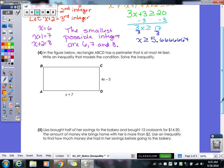So in the figure below, we have rectangle ABCD has a perimeter that is at most 44 feet. Write an inequality that models the condition and then solve the inequality. So perimeter means we do what with our sides? Add them all together. But keep in mind, we've got four sides to the rectangle. Usually, if the rectangle is labeled like this, where only two of them are labeled, a lot of kids forget to add up all four sides. So you've got to remember, there's four sides to this rectangle. So you have two times your length. So two times my X plus 7. Plus two times my width. My 4X minus 5.